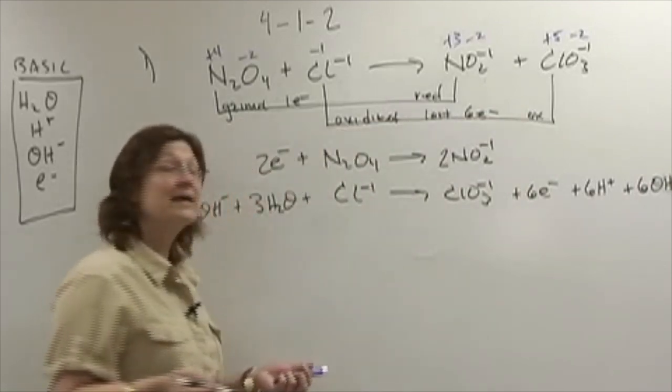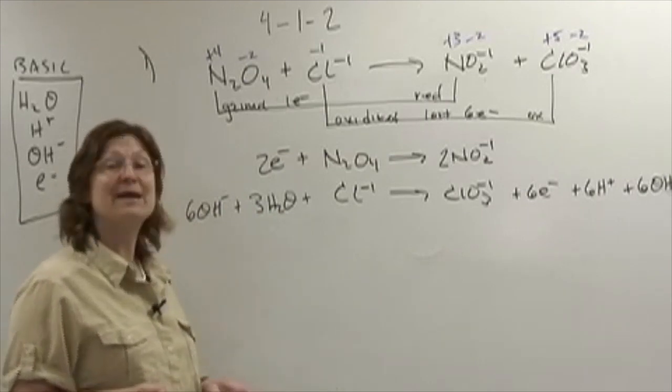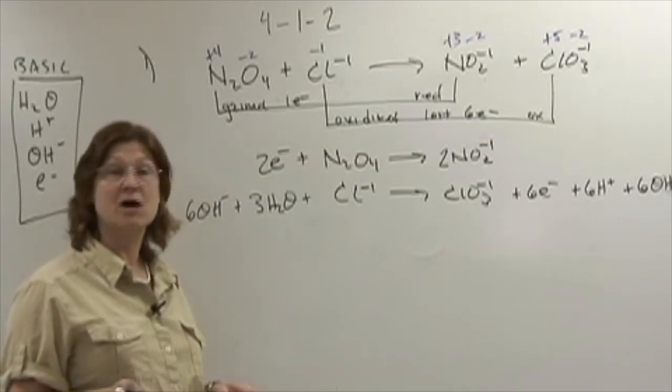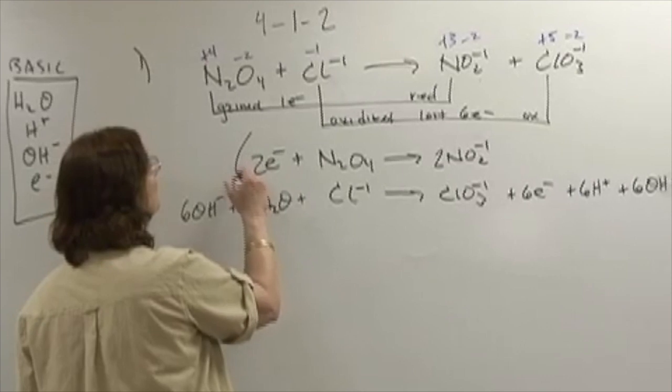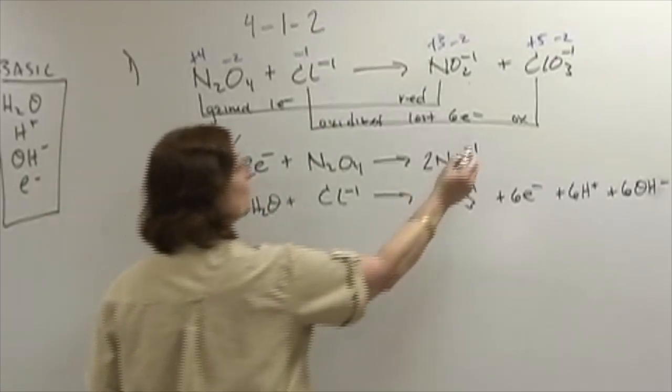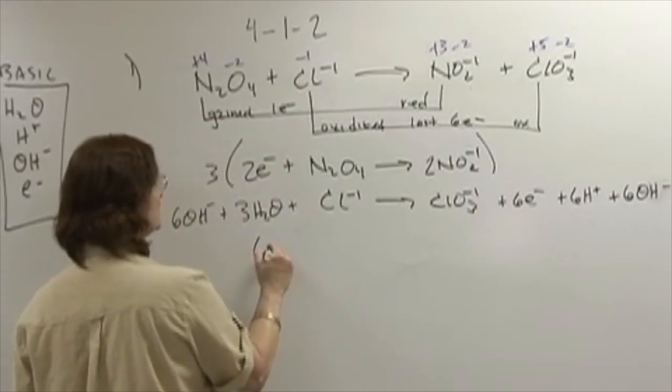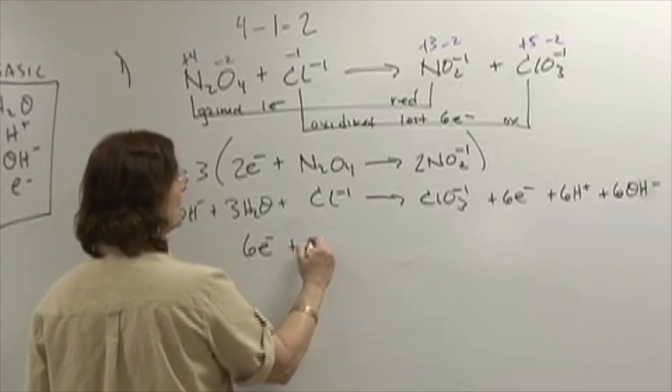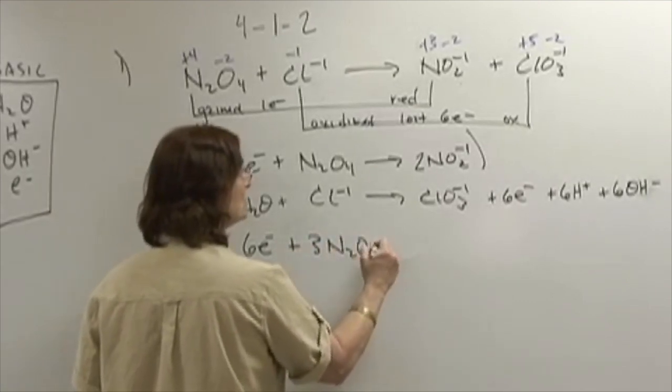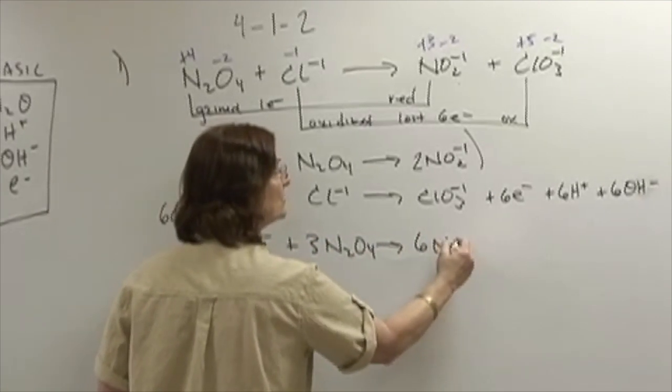Now, before I can go on, I have to have the same number of electrons gained as lost. Therefore, I will multiply the top one by three to get six electrons that were gained, three N2O4s and six nitrite ions.